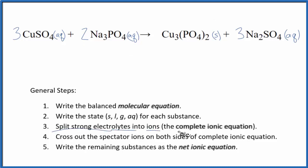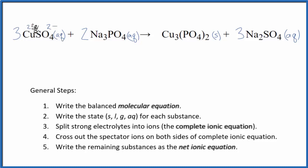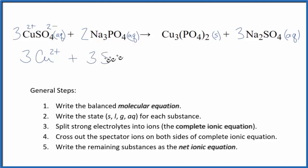Now we can split the strong electrolytes apart into their ions, and that'll give us the complete ionic equation — sometimes called the total ionic equation. The sulfate ion is always 2 minus, which means copper is 2 plus, that's why we call it copper 2. So we have three Cu²⁺ ions — I'll write aqueous at the end — plus three SO₄²⁻ ions. Sodium is in group 1 and has a 1+ charge, and the phosphate ion is always 3 minus.